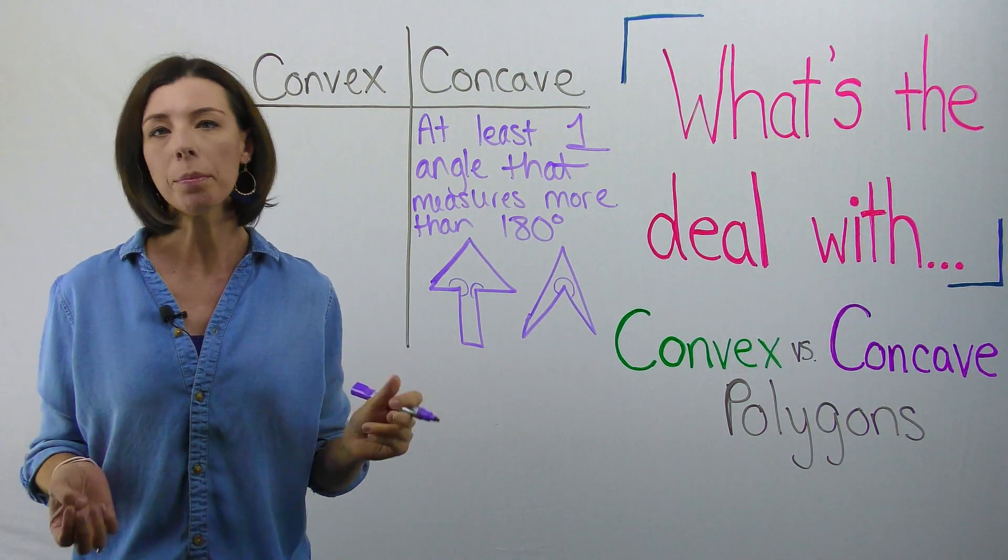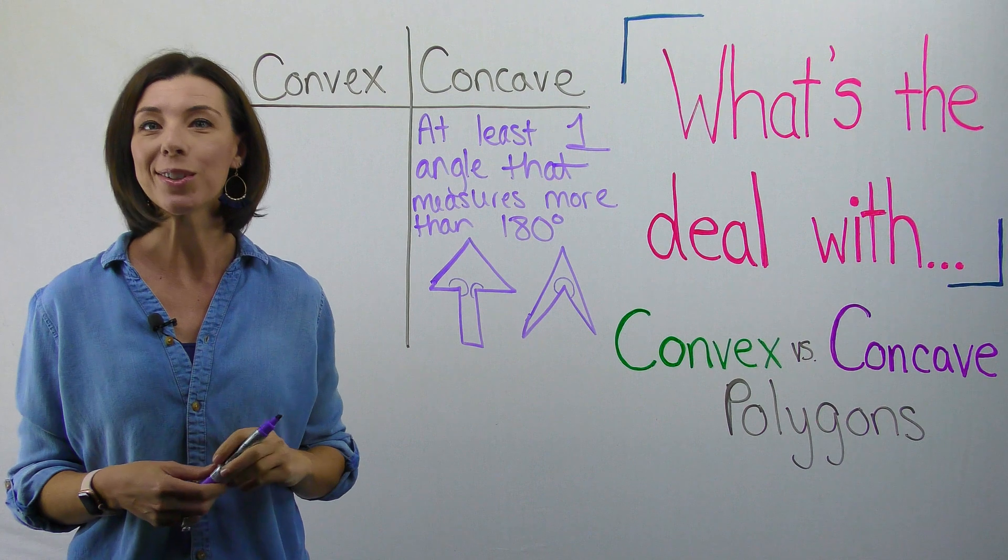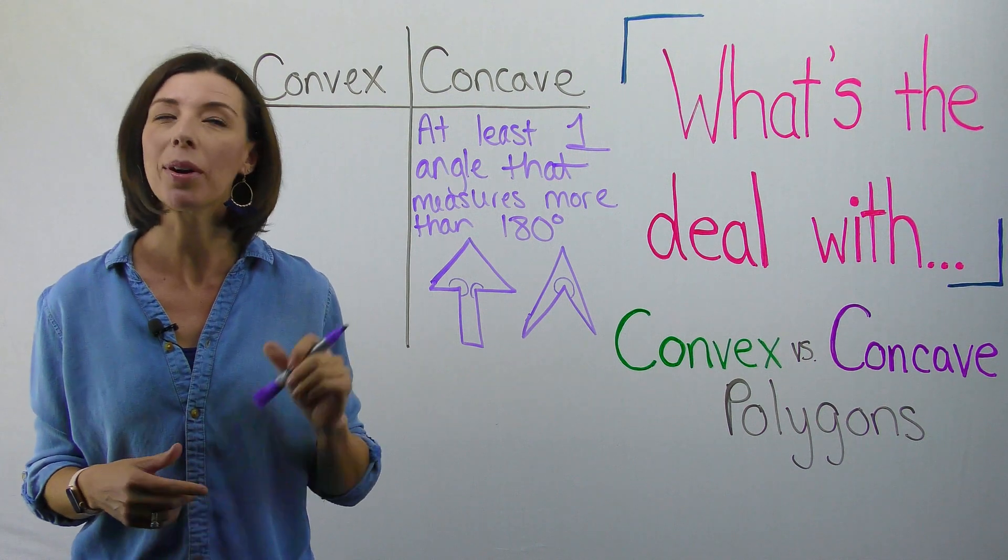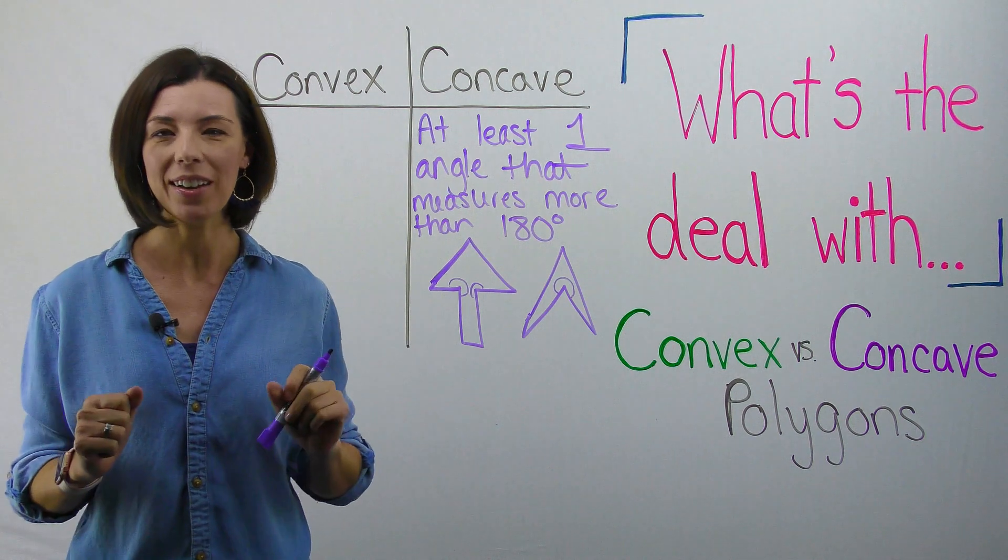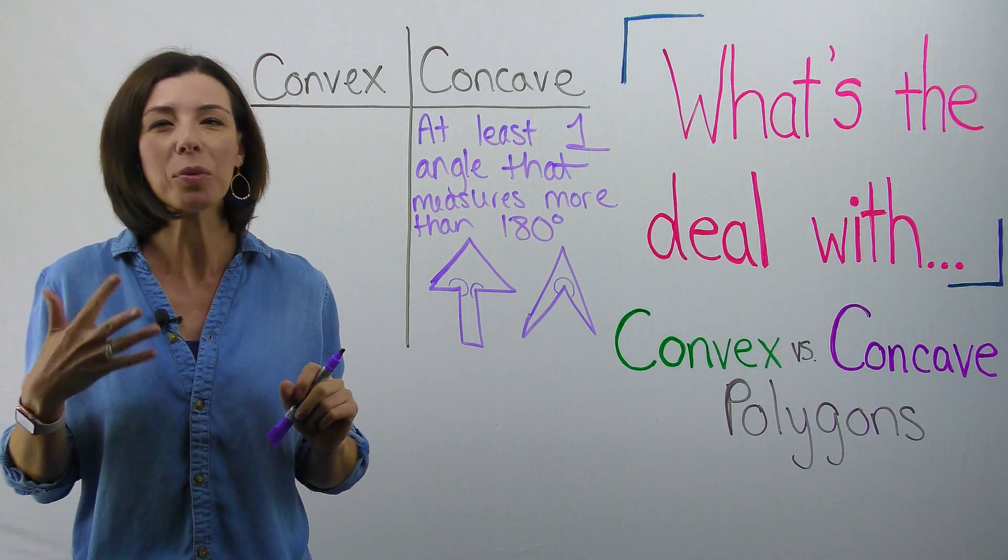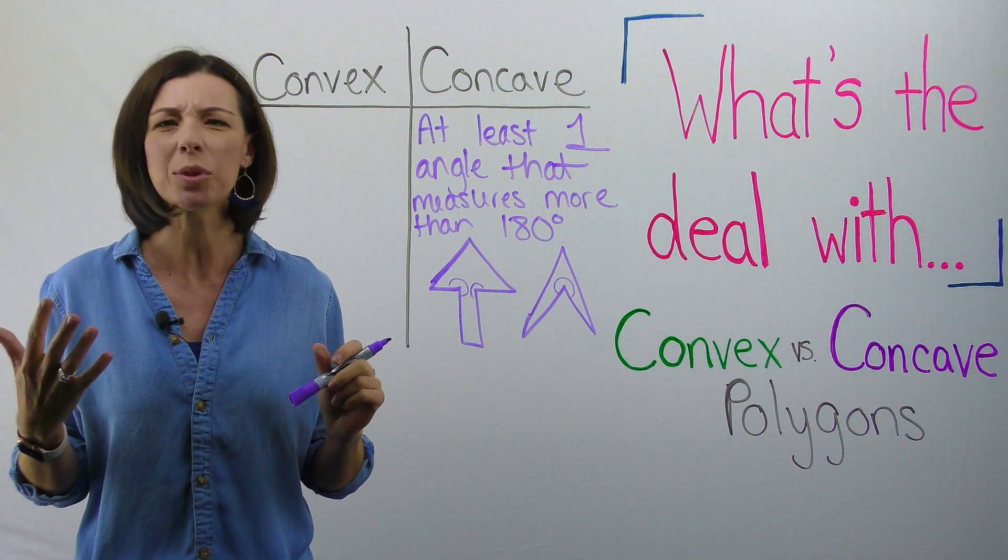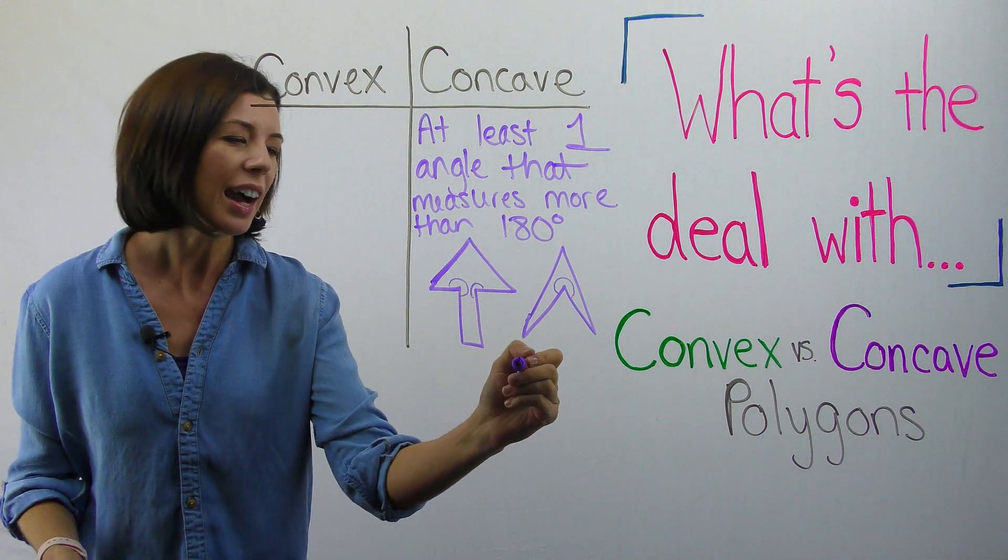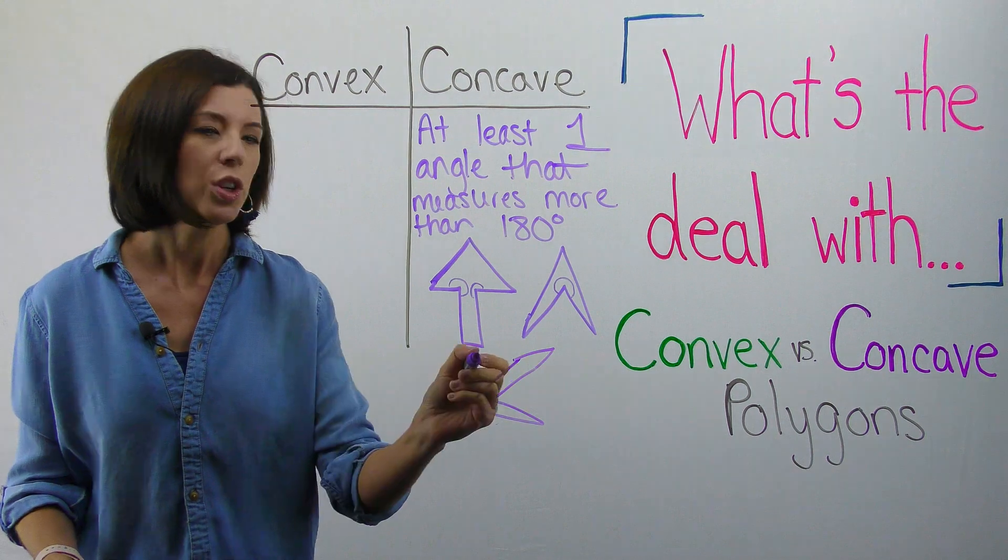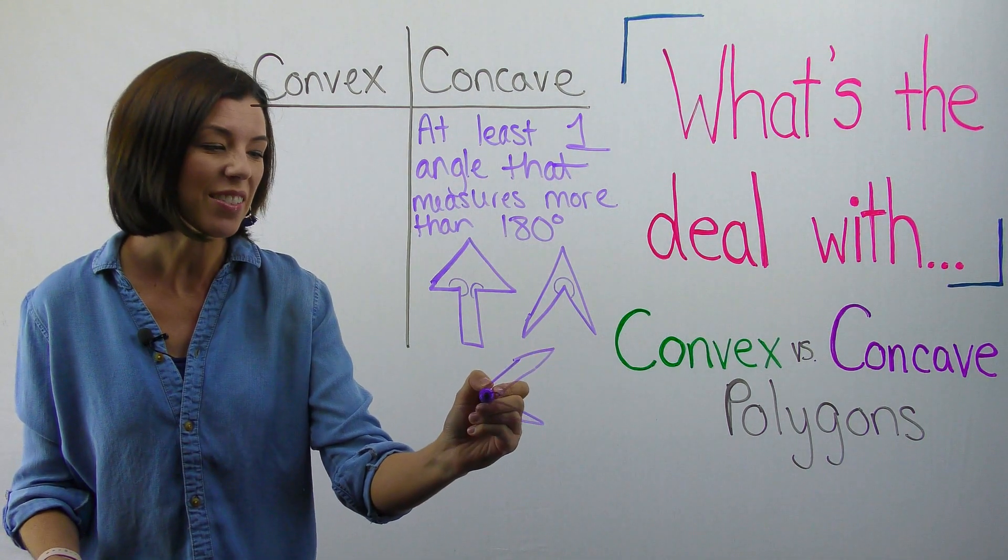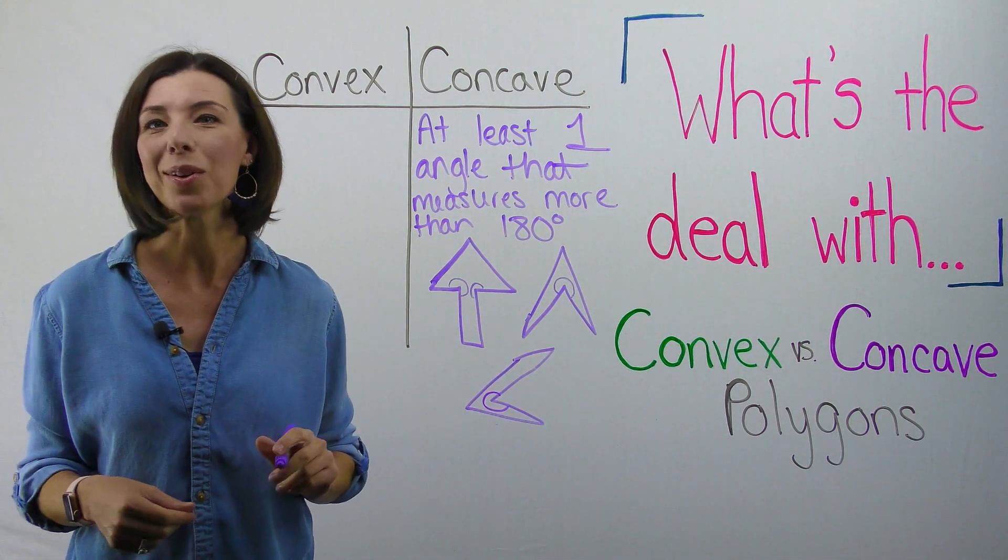One way that I like to remember concave polygons is the cave part of that concave, right? I think of the reflex angle, I don't know why, as some sort of weird caved or a caved in shape if I think of something like this. Notice that it looks kind of like a cave and it's got this reflex angle back there.